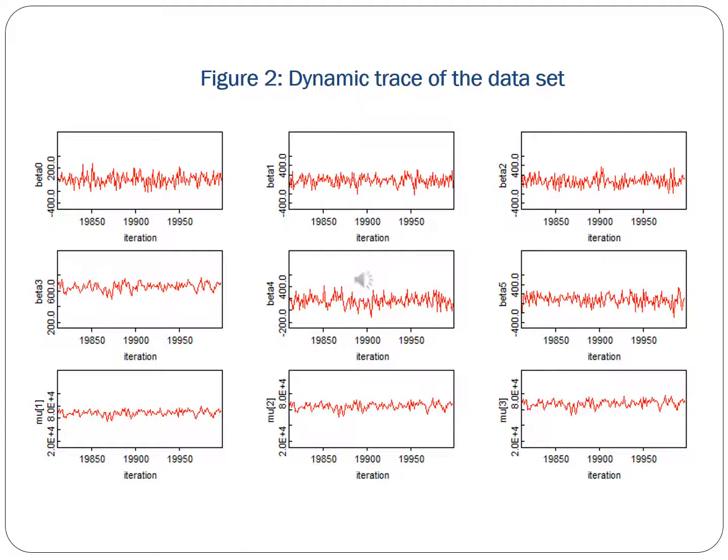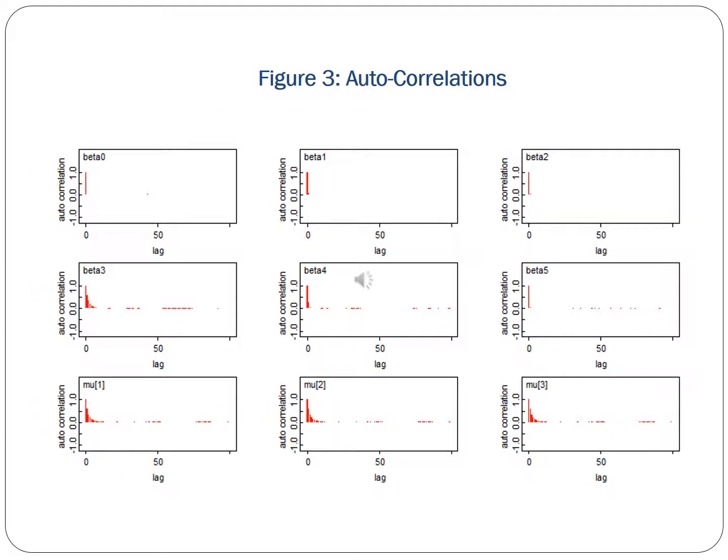Descriptive analysis of the posterior distribution indicates a considerable improvement of the precision in the prediction of the BIST 100 index when including model covariates. Observing all parameters, we can infer that the effect of four explanatory variables have an important contribution to the prediction of the BIST 100 index. However, the interest rate did not seem to have a significant effect on the BIST 100 index.